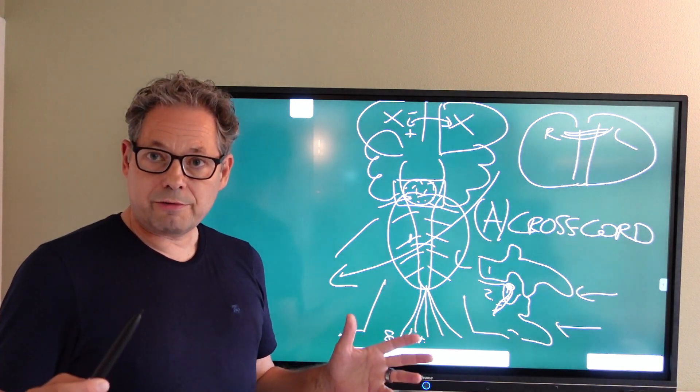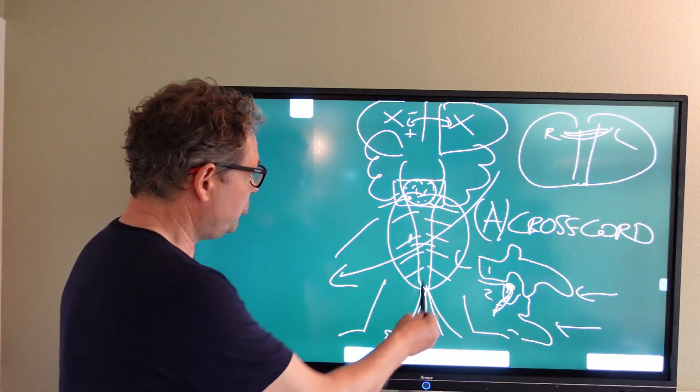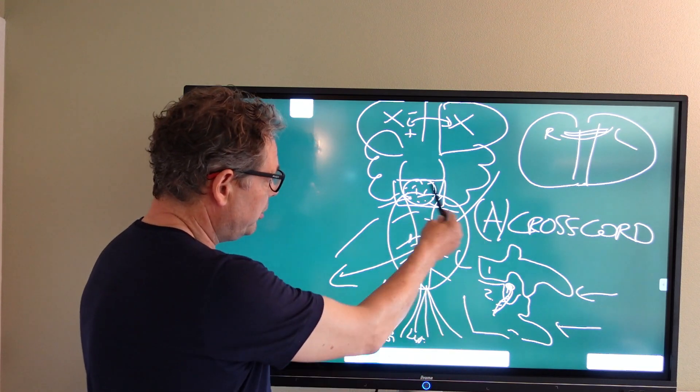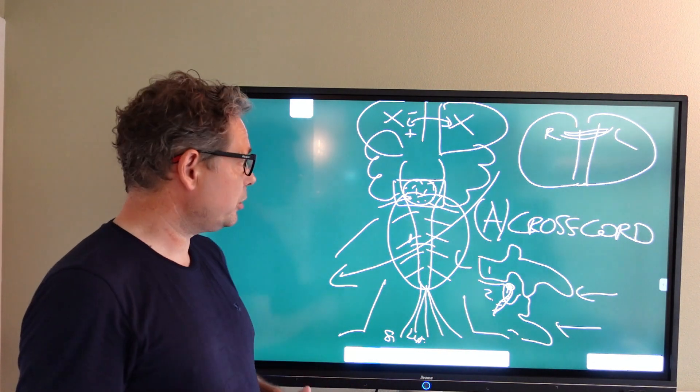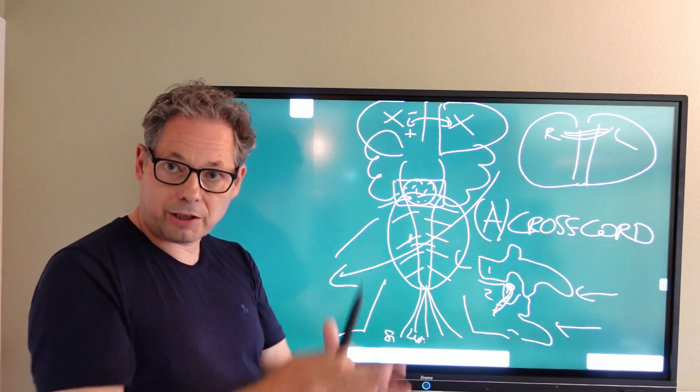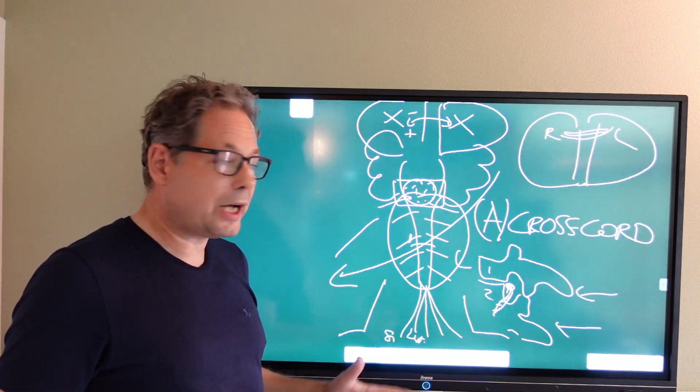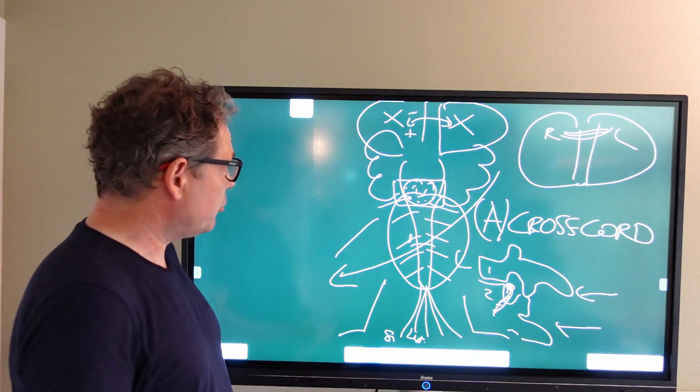So the term cross-cord reflex is a gathering term of especially spinal cord reflexes, reflexes that exist in the spinal cord at a lower level. This is also where the development of the brain starts and that you can go back to, can rely on when the brain falls away, for example, through a stroke.